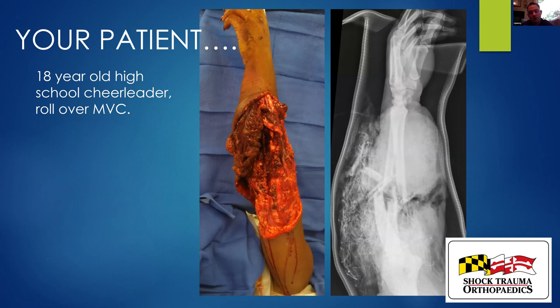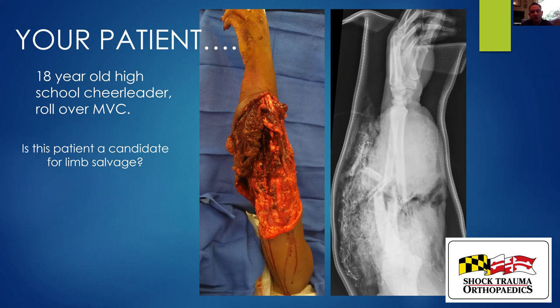I'm going to start with some food for thought. These are all my cases. Here's your first patient, an 18-year-old rollover MVC looking forward to prom — you can see this devastating 3B both bone forearm fracture. Is this patient a candidate for limb salvage? Run through your own minds how you would get her from this to a salvaged limb. This is obviously a 3B, but throughout this talk you'll find that all 3B fractures are not created equal — that's one of the points of this presentation.